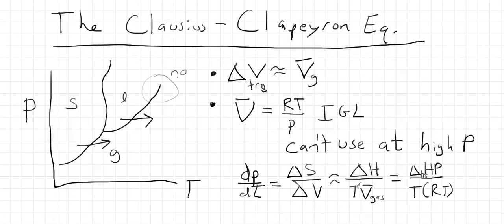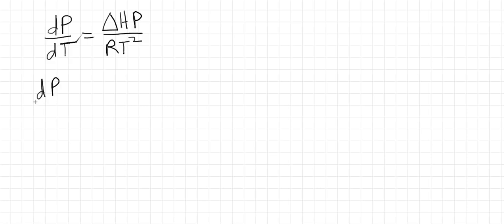Now if we're going to integrate this, we've got to get all the variables, one variable on one side and the other variable on the other. So we have dP over P and we're going to have delta H over R, and then we're going to have one over T squared dT. So we've separated the variables and we're going to integrate.